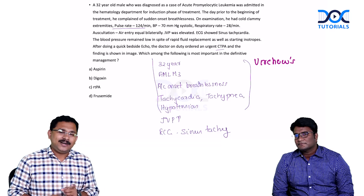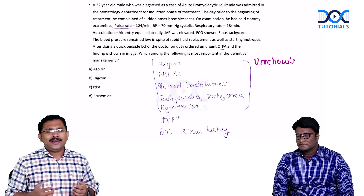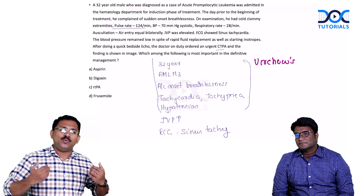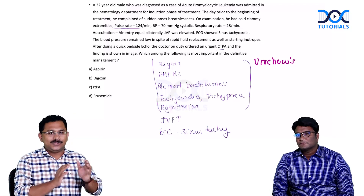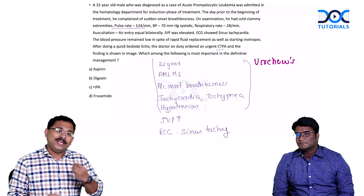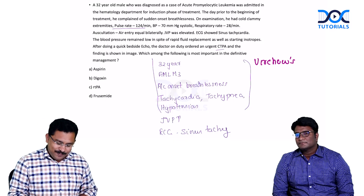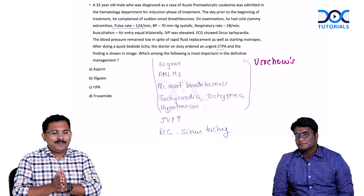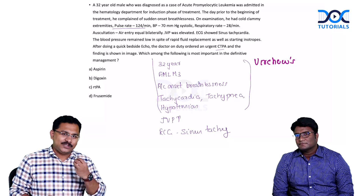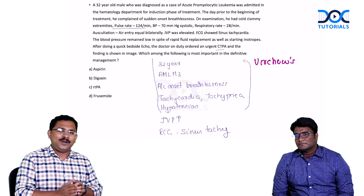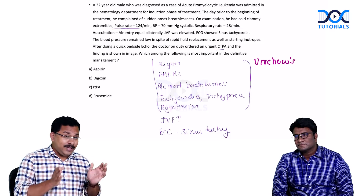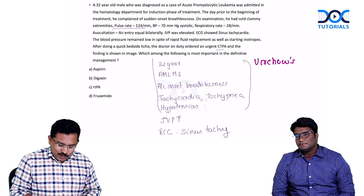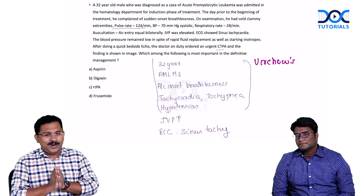Tachypnea, tachycardia, hypotension can happen in other etiologies as well. But the auscultation is showing normal breath sounds bilaterally. That definitely rules out conditions like a pneumothorax. If it was acute pulmonary edema, you would have got bilateral basal crepitations - so that is also ruled out. This again makes us strongly suspect a pulmonary embolism. In pulmonary embolism, because of pulmonary vasoconstriction, you can have the development of acute cor pulmonale, RV dilatation and dysfunction, and definitely an elevated JVP. So this is likely to be a case of pulmonary embolism.